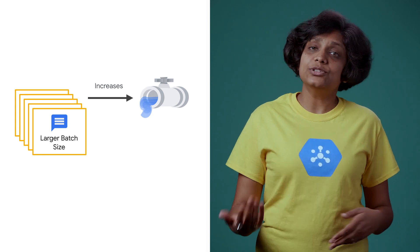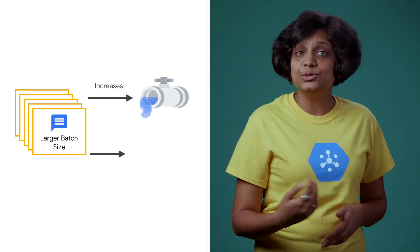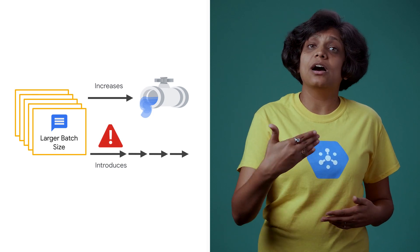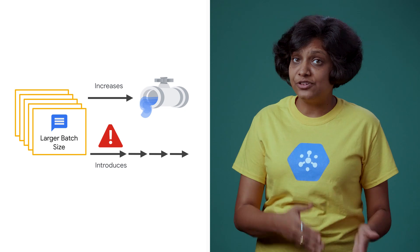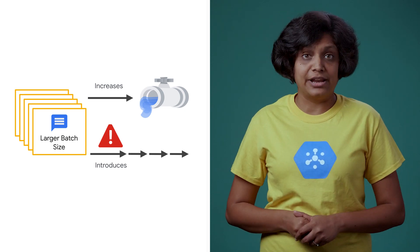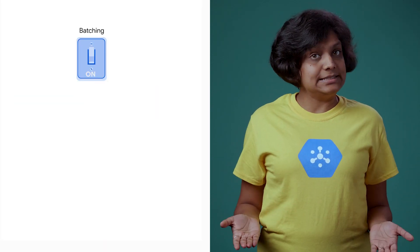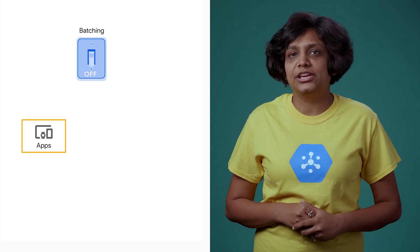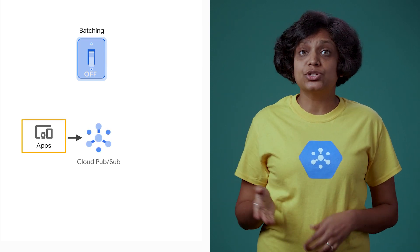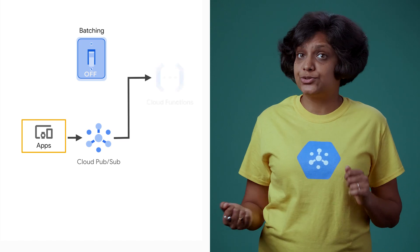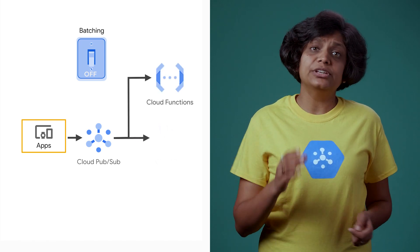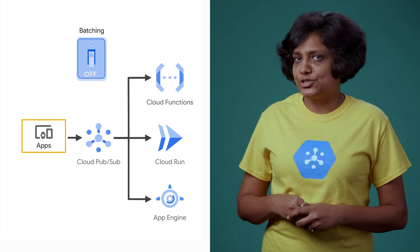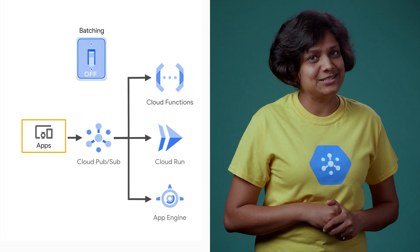But it also comes at a cost. It introduces latency for individual messages, which are queued in memory until their corresponding batch is filled and ready to be sent over the network. To minimize latency, batching should be turned off. This is particularly important for applications that publish a single message as part of the request-response sequence. However, the additional network and computing overhead may make small batches preferable. You'll have to tune your system.